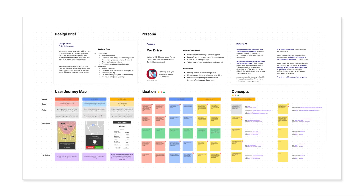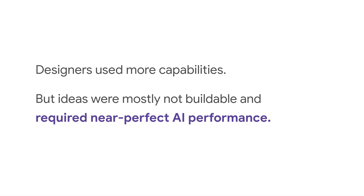We designed a pilot study to assess these. We created two design briefs — a rental vacation service and a ride-hailing service — and prepared a Figma board detailing each brief, persona, user journey, pain points, and available data sources. We asked design students to ideate AI-enabled features, first without the slides for the first brief, then with the slides for the second. We found that using the resource helped ideate using a broader range of AI capabilities, but the quality of ideas didn't seem to improve. Most ideas were not buildable, often because they required near-perfect AI performance to be useful. So on a surface level, our pilot study failed, but it surfaced AI model performance as a key consideration for ideation.